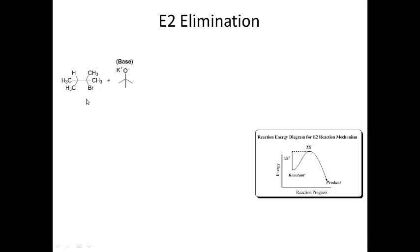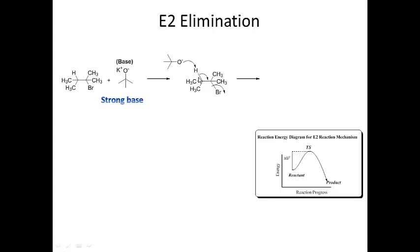For the E2 elimination, here I have an alkyl halide with an alpha proton on one carbon and the leaving group on the adjacent carbon, treated with a strong base — in this case potassium tert-butoxide. The base comes in, deprotonates at the alpha hydrogen, those electrons come over to make the pi bond, and then the electrons leave with bromine. What I want to point out is that the alpha hydrogen and the leaving group are in an orientation called anti-periplanar.